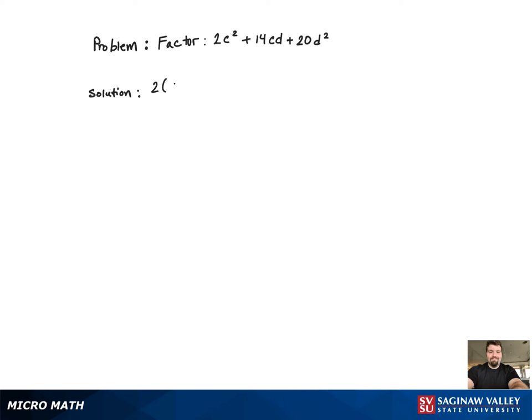For this factoring problem, we will begin by pulling out the greatest common factor, which is a 2.